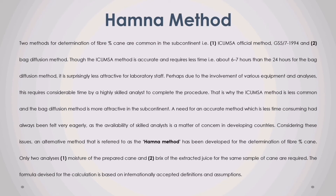Hamner method. Two methods for determination of fiber percent cane are common in the subcontinent: one, the ICUMSA official method GS 5-7 1994, and two, the bag diffusion method. Though the ICUMSA method is accurate and requires less time — about six to seven hours compared to 24 hours for the bag diffusion method — it is surprisingly less attractive for laboratory staff, perhaps due to the involvement of various equipment and analyses. That is why the ICUMSA method is less common and the bag diffusion method is more attractive in the subcontinent.